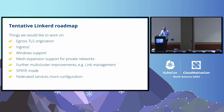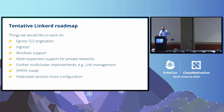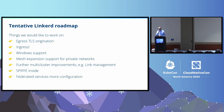Here's the roadmap — these are things we're planning on working on in some capacity, in no particular order: TLS origination, ingress support, Windows support, mesh expansion for private networks — right now we only support flat pod-to-pod networks. Further multi-cluster improvements — the link object works fine with two clusters but gets really hairy when you have 50 clusters trying to link together. SPIFFE inside the cluster — a lot of people have been asking for that. And more configuration on federated services.